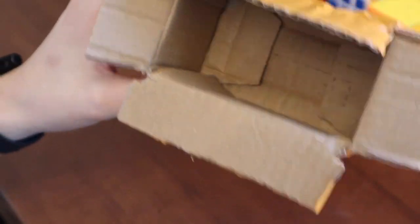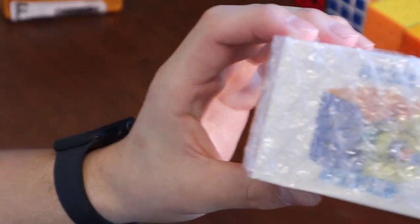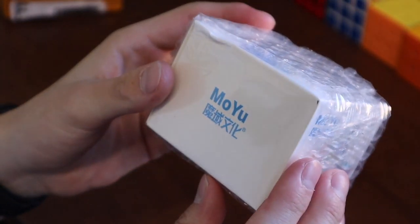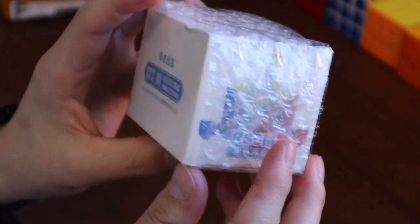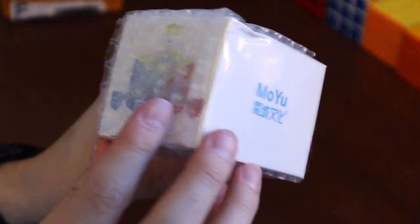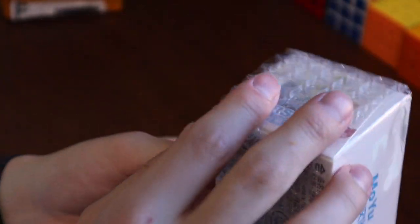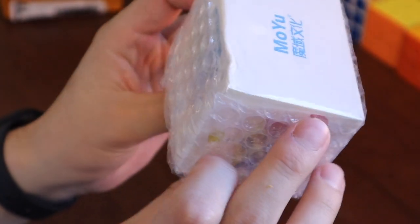There's the packaging, nothing else inside. And then here is the cube, this is the new Moyu magnetic cube and I'm not sure if you can hear that, but it seems like something is moving around inside, so hopefully that's not anything important.